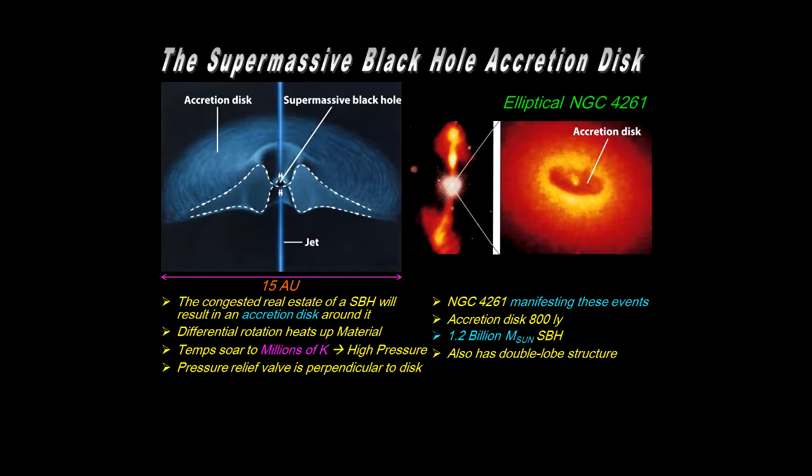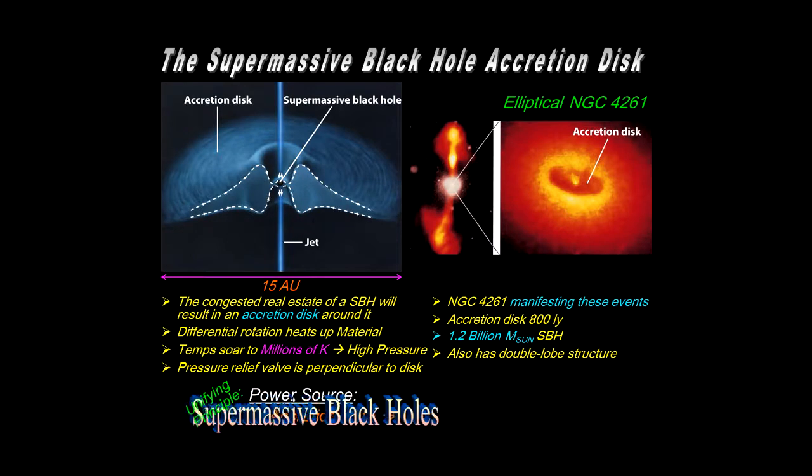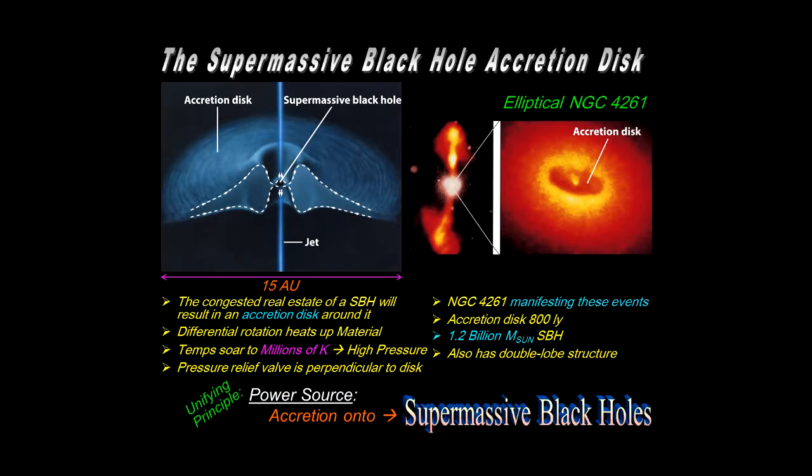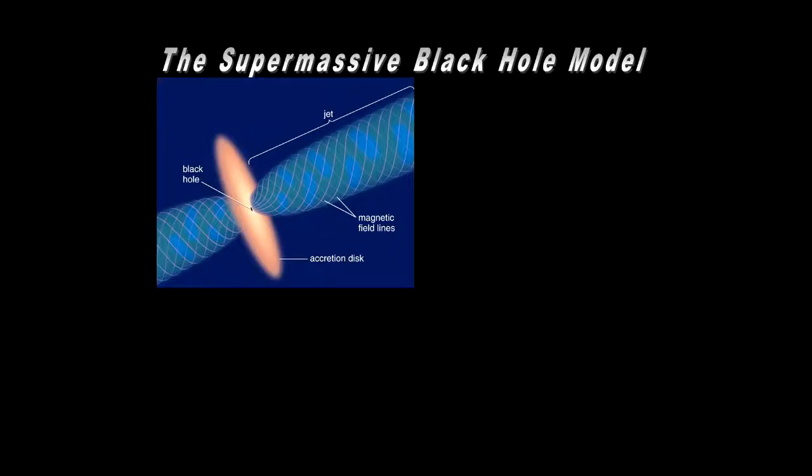Not easily seen in this image, but other images show the double lobe radio sources. The unifying principle that brings together everything we're talking about is that the power source is mass accreting onto supermassive black holes. So that is the agreed upon best explanation for all the phenomena that we've been discussing. And now let's put it together in a basic model. And now a basic overview of the supermassive black hole model for active galactic nuclei.